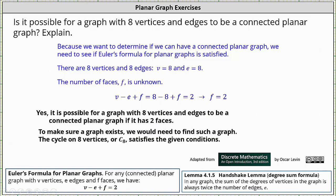To make sure a graph exists, we would need to find such a graph. The cycle on eight vertices, or C8, satisfies the given conditions.